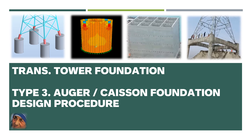This type of auger or caisson foundation is mainly categorized as a deep foundation, where deep foundation is required. The fourth picture is a construction picture of an auger and caisson foundation, which has a pedestal over the well foundation or caisson foundation and also has tie beams. Now let's look into the detail about the design procedure.